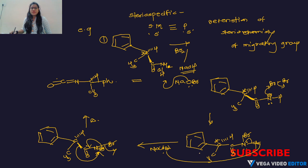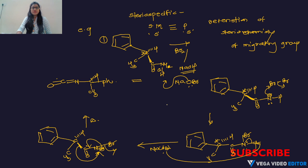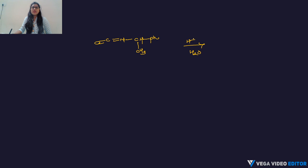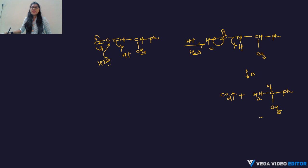We get the alkyl isocyanate intermediate: C=O double bond with CH(Ph)(CH₃) attached to nitrogen. This intermediate undergoes acid hydrolysis — water attacks the carbonyl carbon of the isocyanate and nitrogen takes a proton from acid — giving COOH–NH–CH(Ph)–CH₃. Under heating, decarboxylation occurs and CO₂ is released.